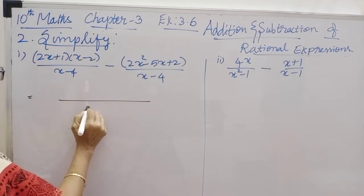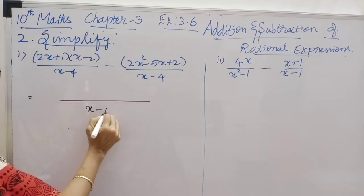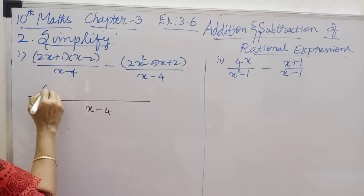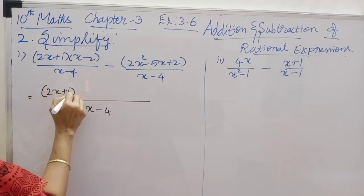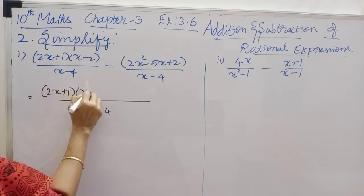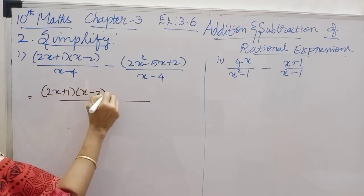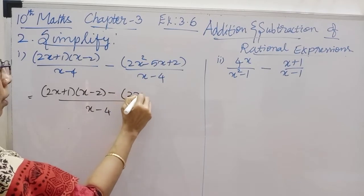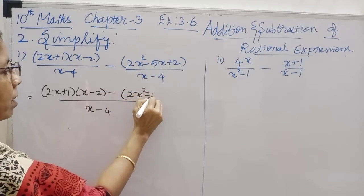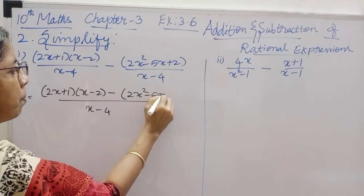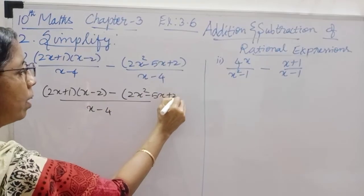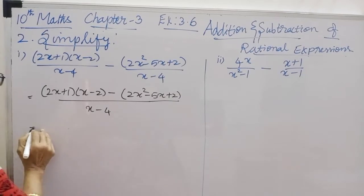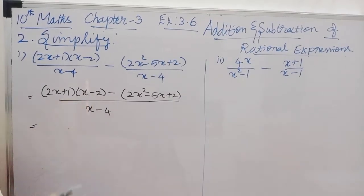x minus 4 is the common denominator. Now, we will add 2x plus 1 into x minus 2, minus 2x squared minus 5x plus 2.